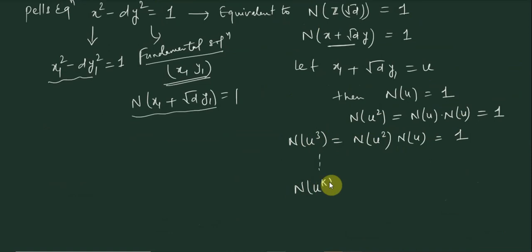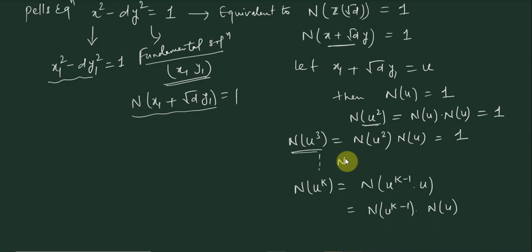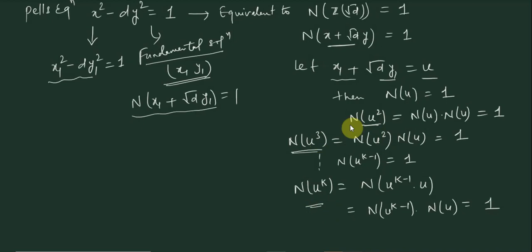By induction using multiplicativity, N(u^k) = N(u^(k-1))·N(u) = 1·1 = 1. This means if we have a fundamental pair (x₁, y₁) such that u has norm 1, then composing u with itself — u², u³, u⁴, u^k — all these Gaussian integers give integer pairs that are solutions of Pell's equation.